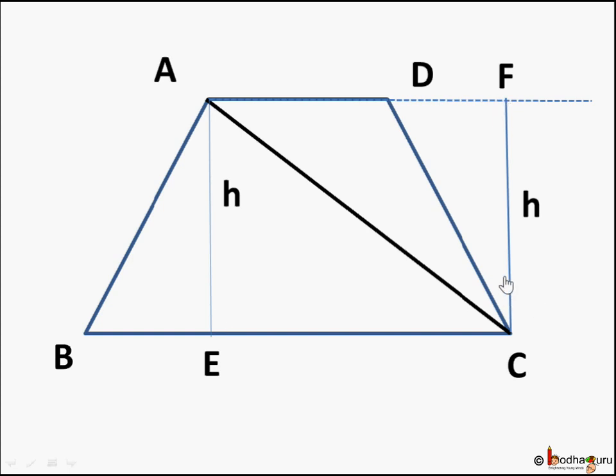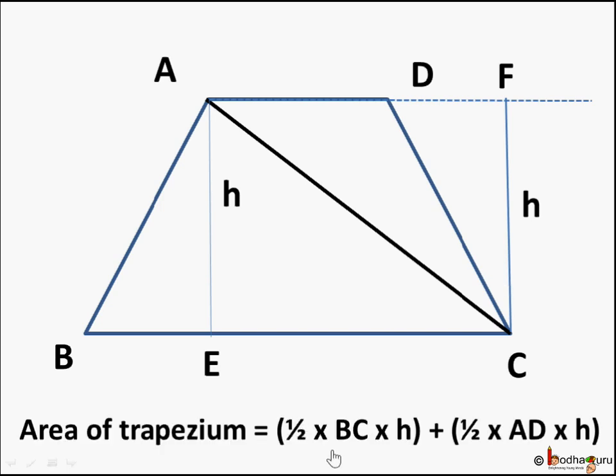So now let's try to find its area. Sum of area of triangle ABC and triangle ACD. Area of triangle ABC is half base which is BC into height which is h, which is also the height of trapezium. Plus area of triangle ACD which is half base which is AD. Remember, this is not the part of trapezium. So base is AD and height is h. It's a virtual line meeting this base, which is same as h.